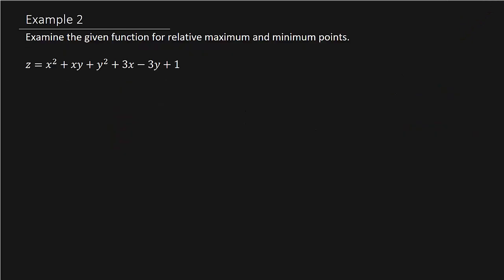Let's look at example two. It says: examine the given function for relative maximum and minimum points — relative maximum, minimum, local maximum, minimum, same thing — so we've got z is equal to x squared plus xy plus y squared plus 3x minus 3y plus 1.